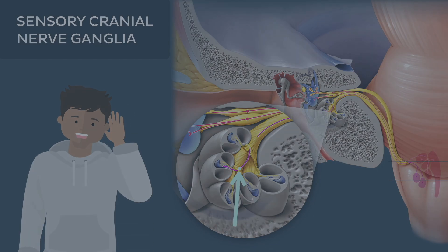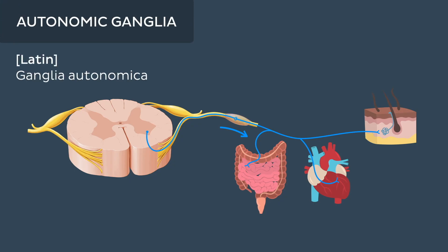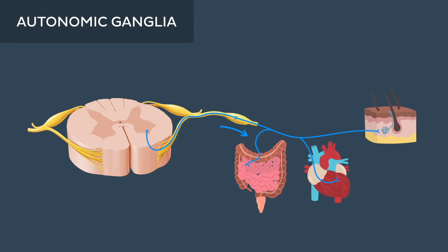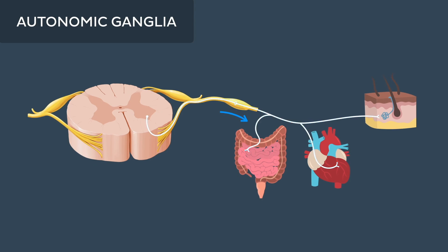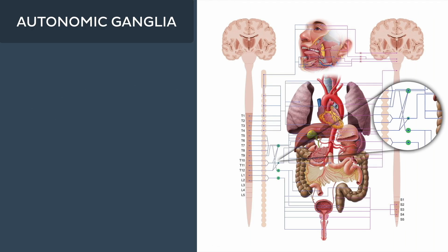The second main type of ganglia found in the peripheral nervous system are the autonomic ganglia, which are relay points along the autonomic pathways between the central nervous system and target organs, where pre- and postganglionic autonomic neurons synapse. These can be further divided into the sympathetic ganglia, which include the prevertebral and paravertebral ganglia.